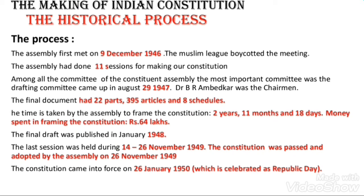We will now see the final process of making of our Indian Constitution. The Constituent Assembly first met on December 1946. An important thing to note is that the Muslim League boycotted the meeting. The assembly held 11 sessions in total for making our constitution. Among all the committees of the Constituent Assembly, the most important was the Drafting Committee, formed on August 29, 1947.